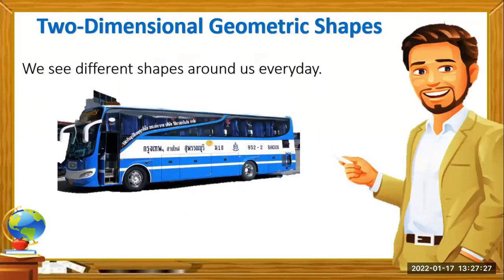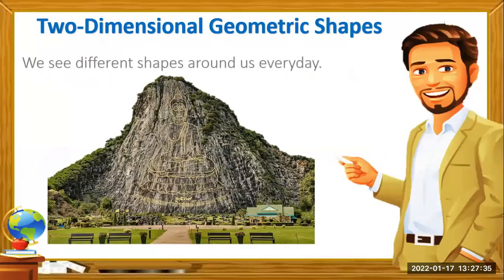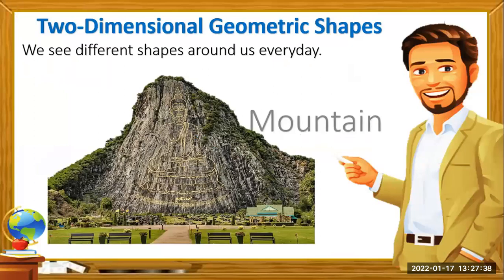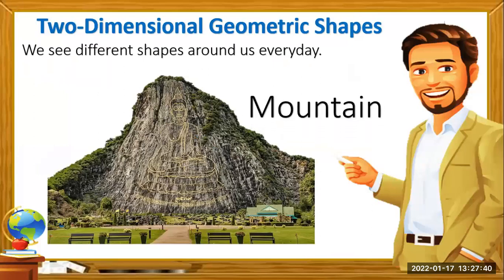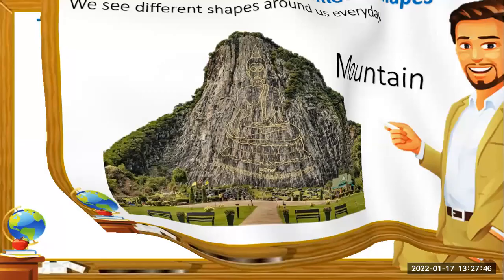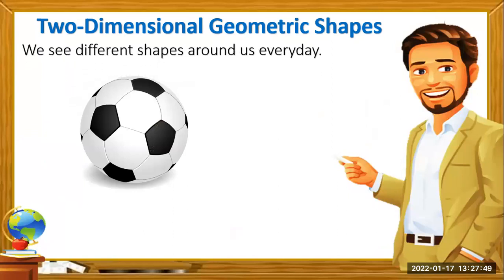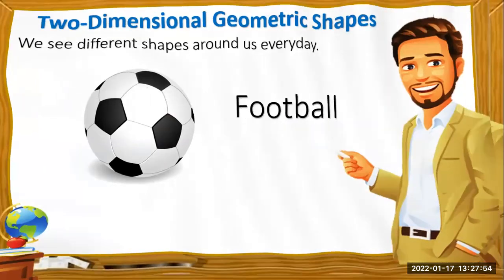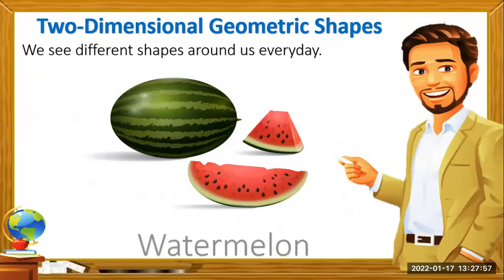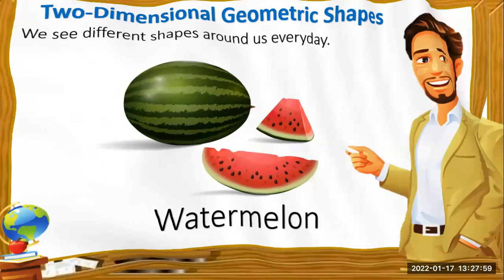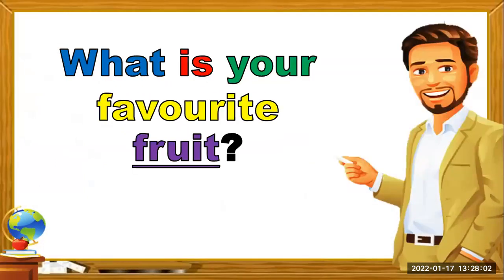We see different shapes around us every day. Here is a bus — as you look at the bus, you will find shapes in it. The second image is a mountain, near Silver Lake in Patia. The third picture is a football, which also has a shape. And here we have a watermelon.